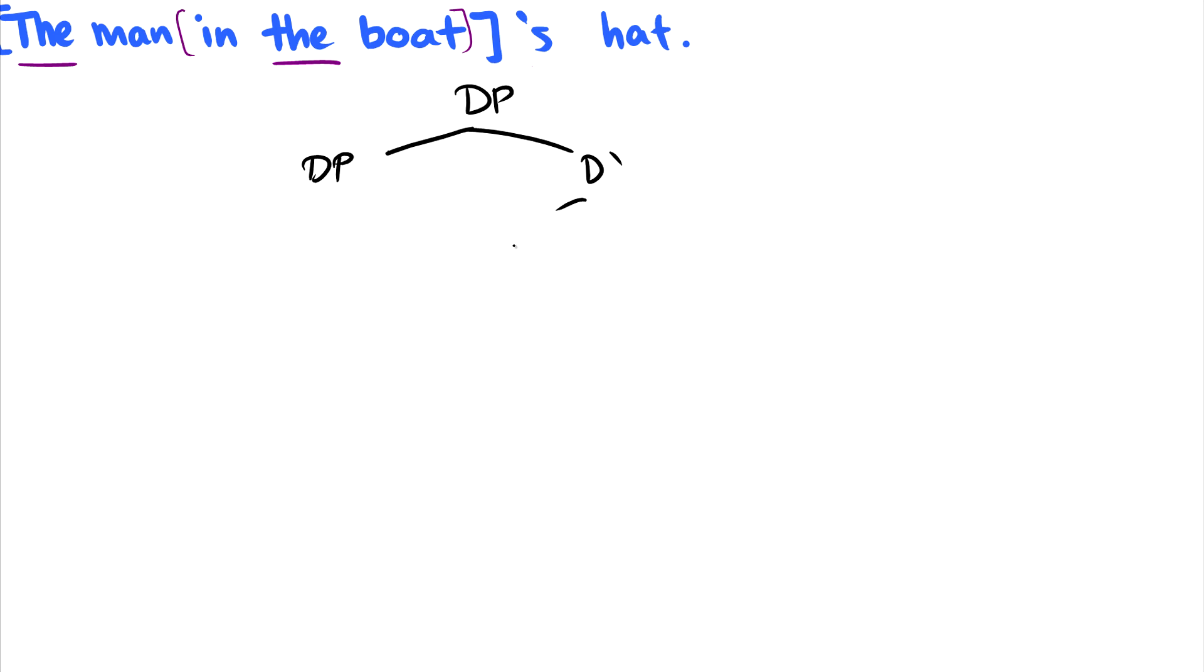D bar, D, this is the possessive S. Finally, the NP. Okay, quickly, hat. That's the thing being possessed. Let's just fill this out fast. This is hat. So something's hat. The man in the boat.